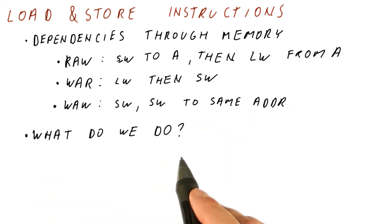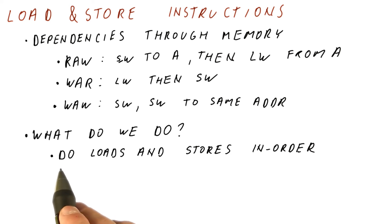So what do we do about these dependencies? In Tomasulo's algorithm, we do loads and stores in order. We don't try to reorder them. As we issue these instructions, we put them in the load or store queue.